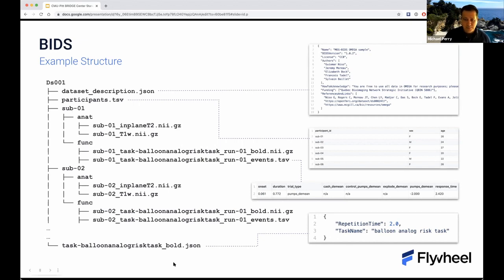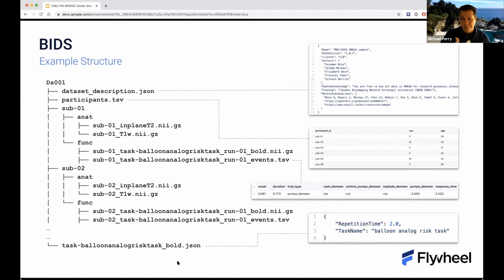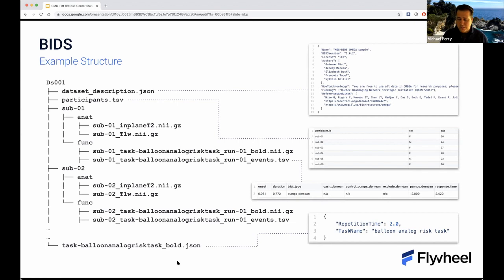You can also have supplemental files describing your tasks if you're doing fMRI, typically in JSON format. They'll have information about the task or about the actual data — for example, TR is represented there. That's important when you're doing analyses and want to tailor your analysis pipeline to fit the data. You'll need this type of information.